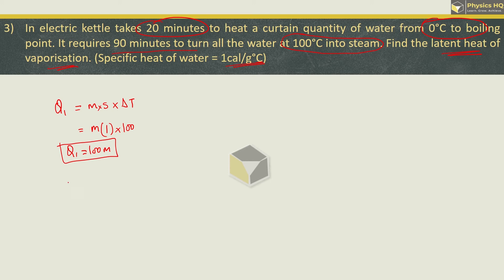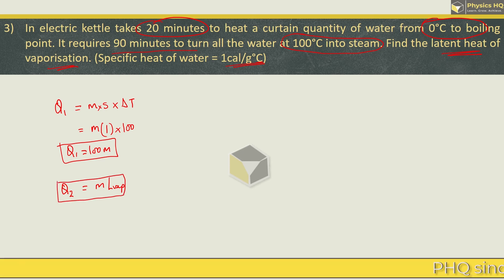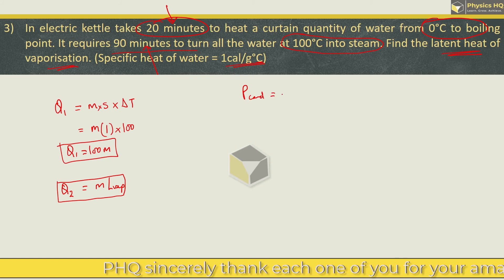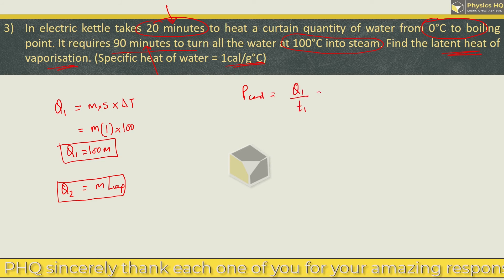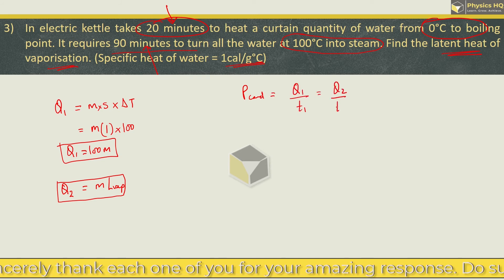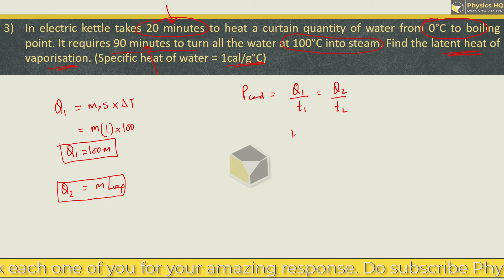Q2 denotes the heat required to convert all water at 100 degree Celsius into steam. The formula is m into latent heat of vaporization. Now in the question they have given that Q1 is applied for 20 minutes and Q2 is applied for 90 minutes. The rate of flow of heat for both is Q1 upon t1 equals Q2 upon t2.